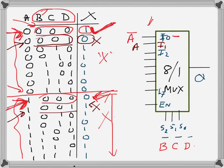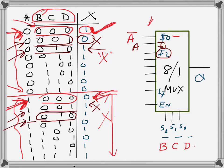Moving to i2, which is selected when BCD=010. Looking at BCD=010 in the truth table: when A=0 the output is 1, and when A=1 the output is also 1. The output is always 1 regardless of A, so I will just connect constant 1 to i2.